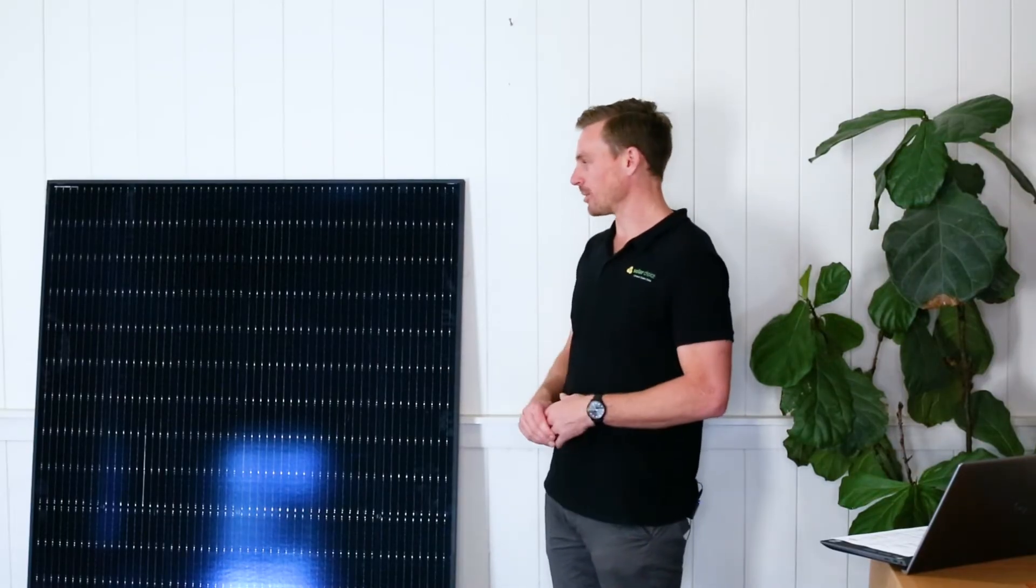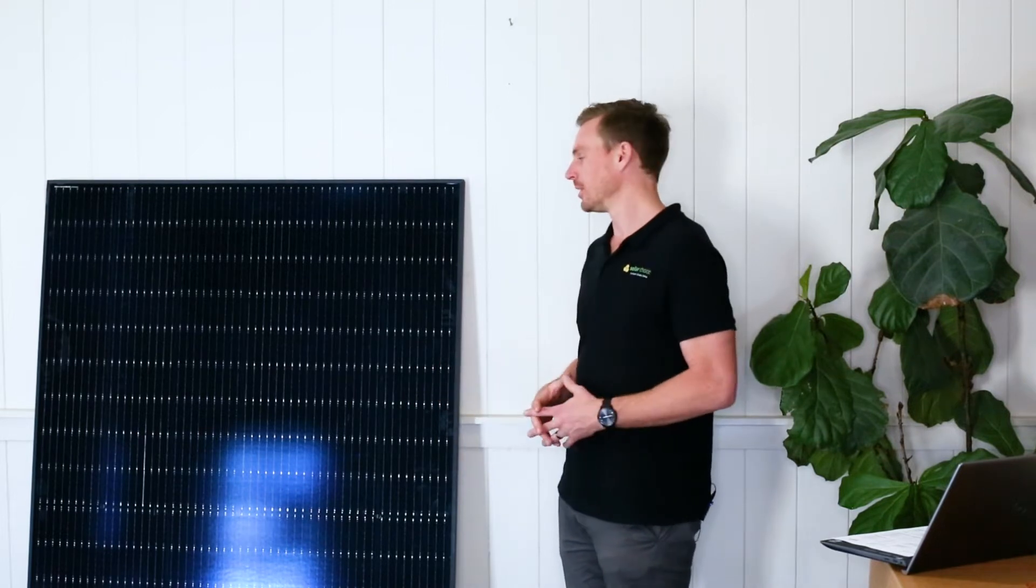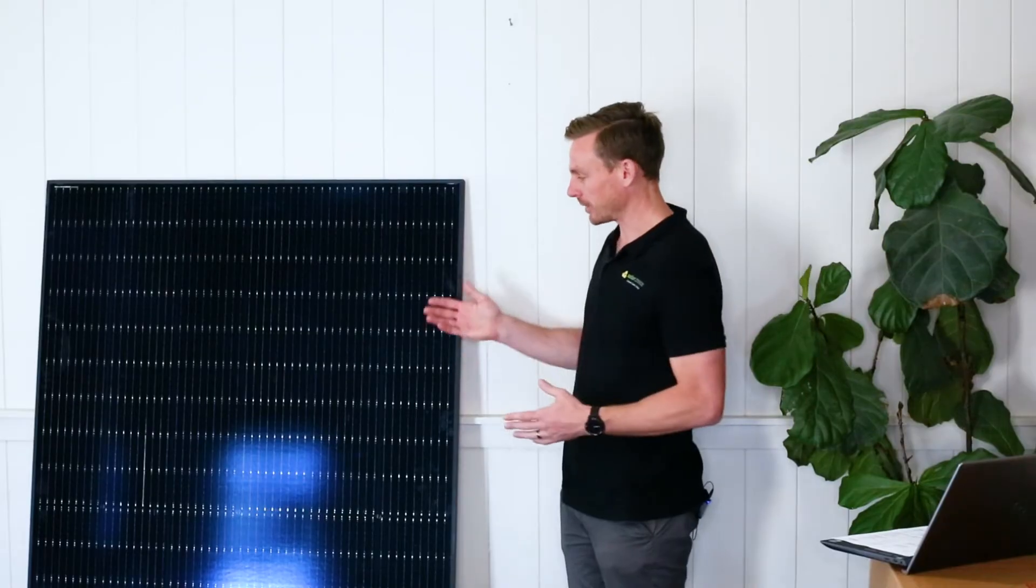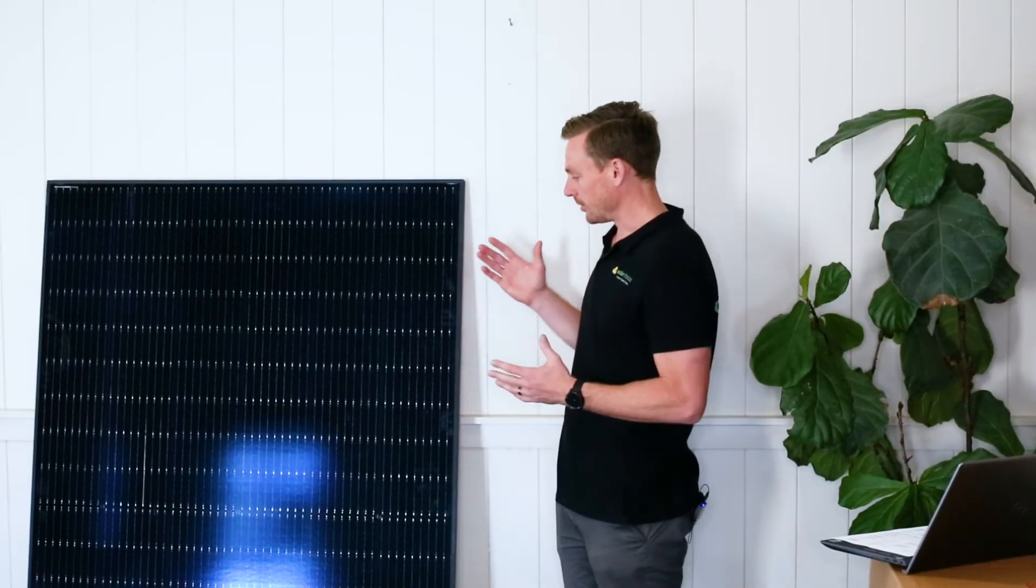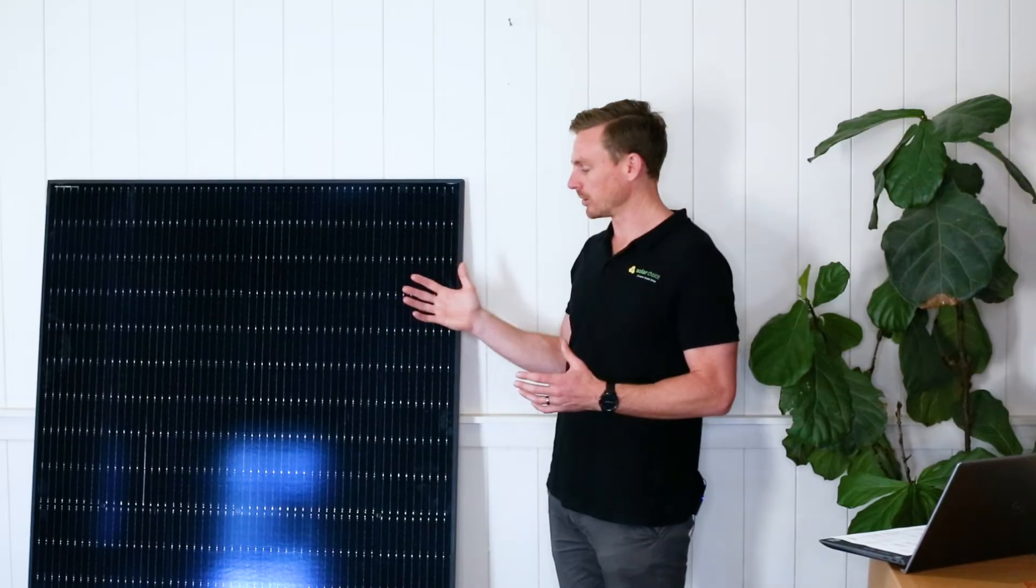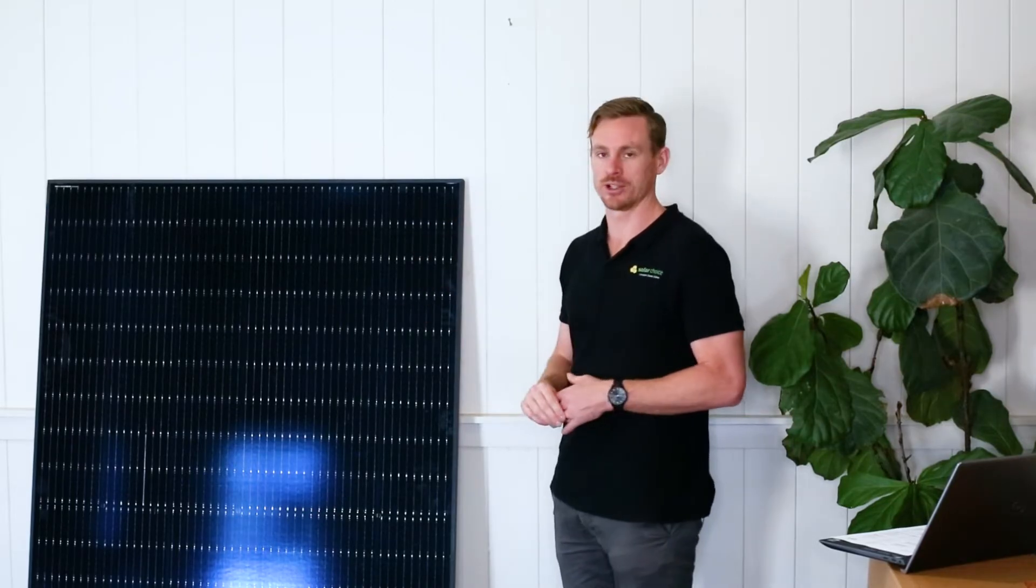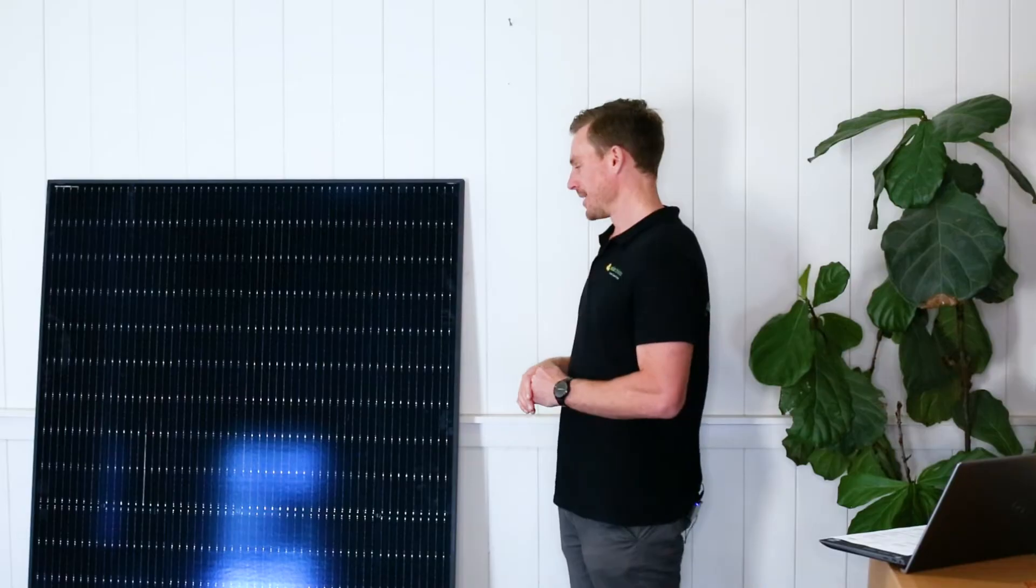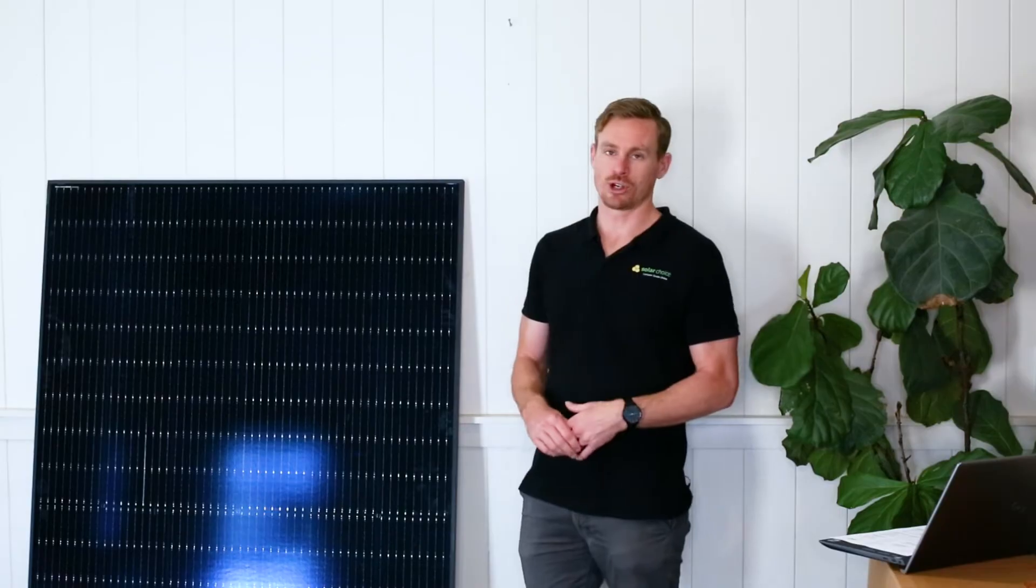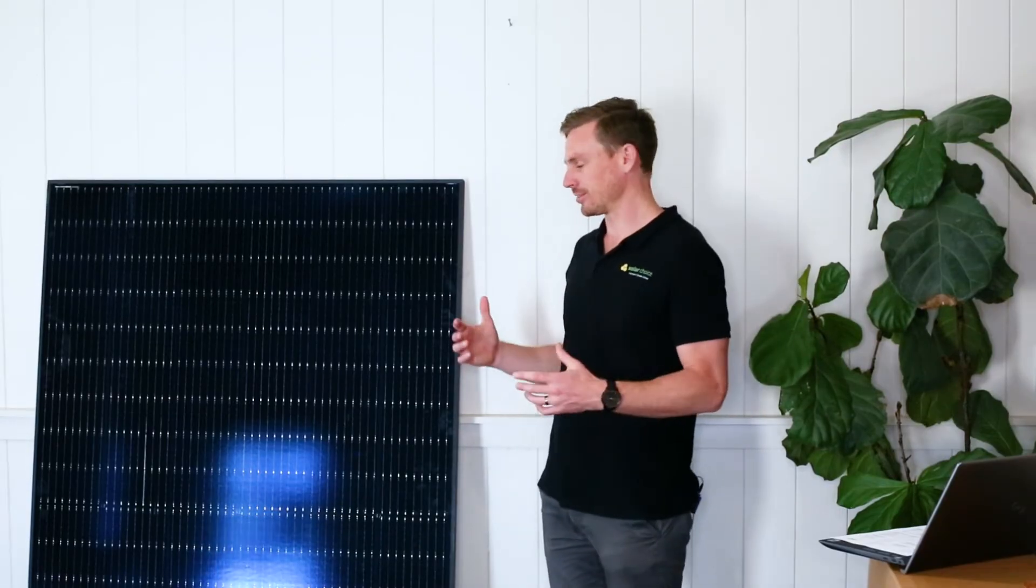And the second thing that jumps out at us is the all black appearance. So the panel not only has black aluminium frames, but the backing sheet and the overall appearance of the solar panel is all black. Often solar panels will have visible bus bars or a white backing sheet in between each of the cells, which has a more traditional solar appearance. So this panel particularly suits homeowners who are looking for something that's sleek and aesthetically appealing for their roof.